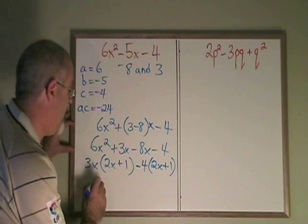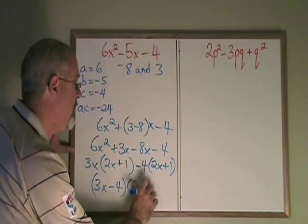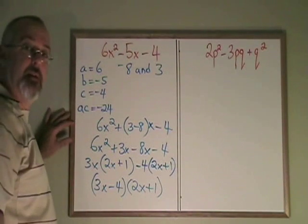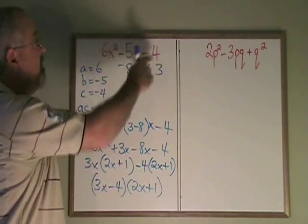Now I can rewrite this 3x minus 4 times 2x plus 1. This is my answer. If I multiply these two binomials together, I will get the original expression.